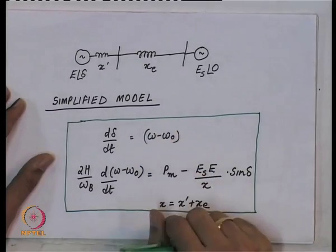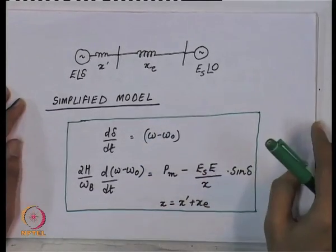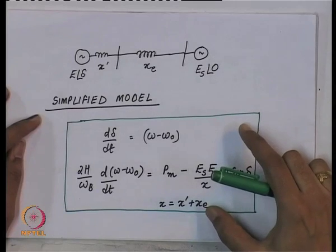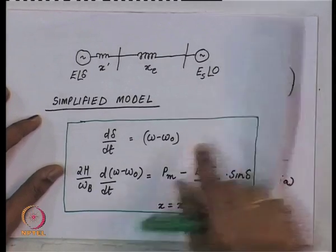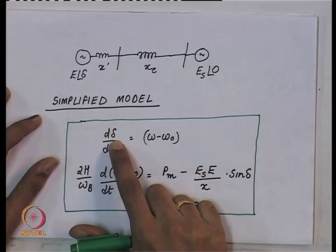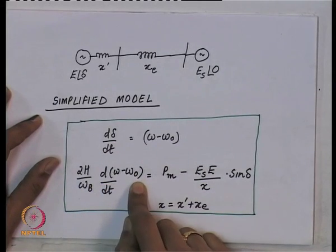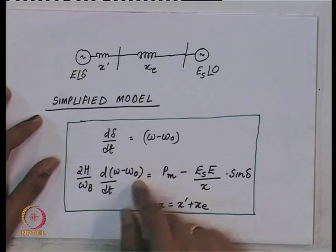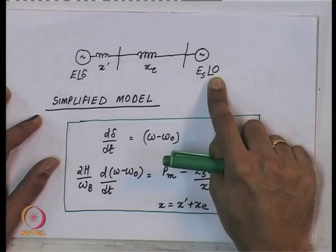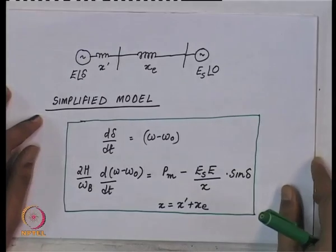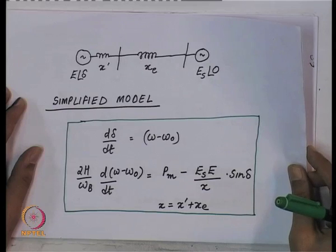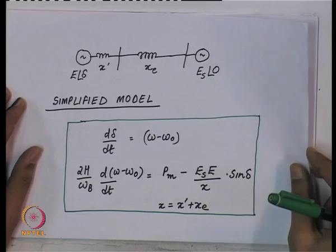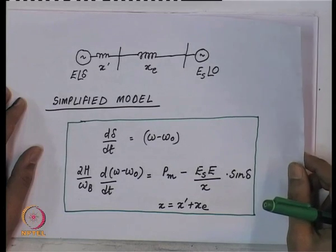The simplified model — I just gave it to you, we did not derive it — is a very simplified model as mentioned in the previous lecture. It gives the motion of the rotor angle and the rotor speed deviations from omega-naught, which is the frequency of the infinite bus. What we did first was study the small disturbance stability of this particular system.